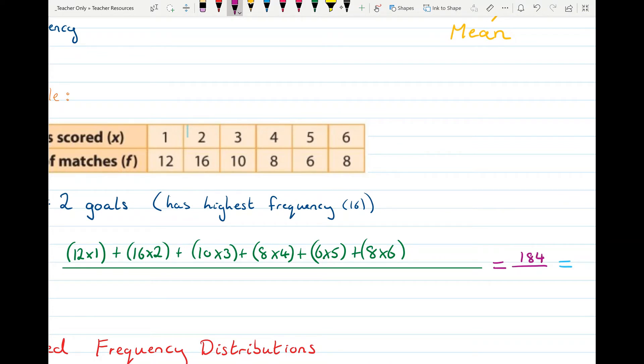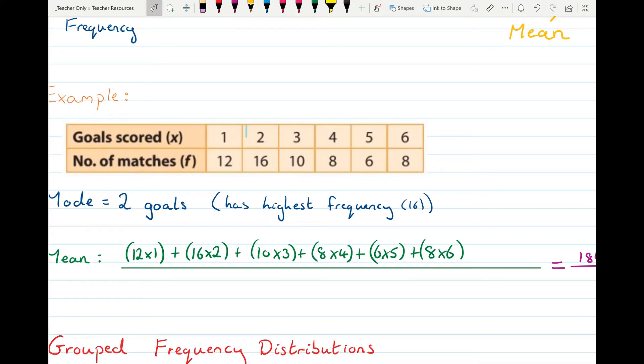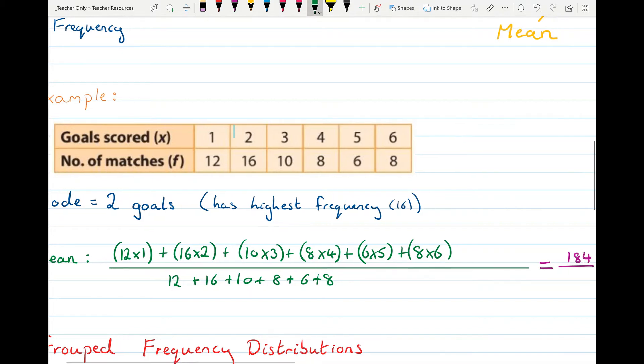So I'll put that on top. Now we then need to divide that by the total number of matches. So the matches were 12 plus 16 plus 10 plus 8 plus 6 plus 8. That's how many matches were played. So to find the average number of goals scored, find the total number of goals and divide by the total number of matches. That's 60.